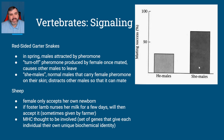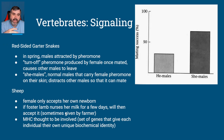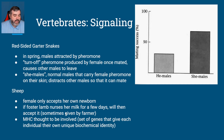That's a type of deceit. With sheep, the female only accepts her own newborn. If you have a lamb that needs to be fostered, they'll take milk from the mother and give it to the lamb for a few days, which allows the mother to accept a lamb from another mother. It's believed that MHC — the major histocompatibility complex gene — is involved, allowing recognition of offspring.